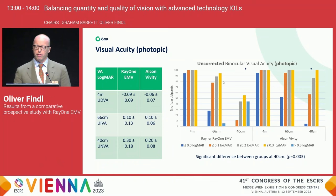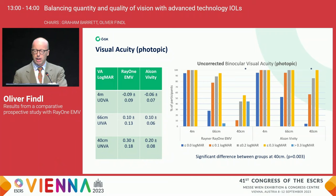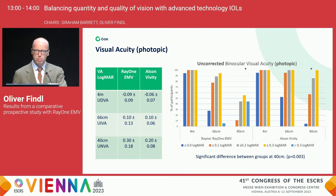Looking at visual acuity — binocular uncorrected for different distances, distance, 66 centimeters, and 40 centimeters (66 cm being the powered outcome) — between the Rayner and the Alcon there is actually no significant difference for distance and intermediate. We do see a difference for near, as you would expect, because this is a monofocal plus in that range, while the Vivity is an EDOF lens. You do have significantly better uncorrected binocular near acuity with the Vivity, always binocular because this is a monovision setting.